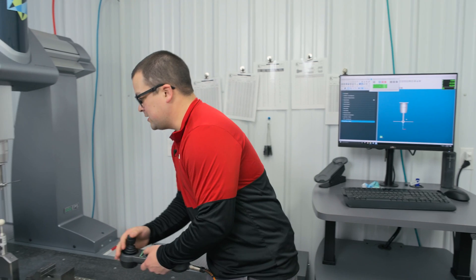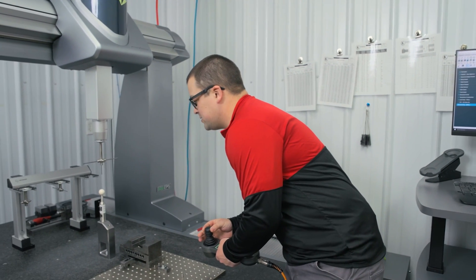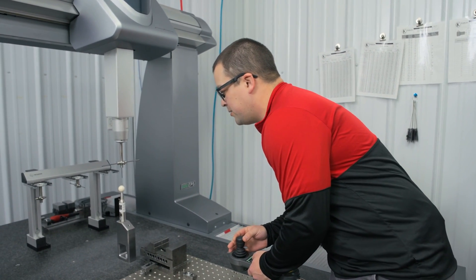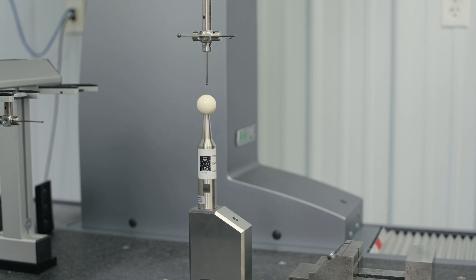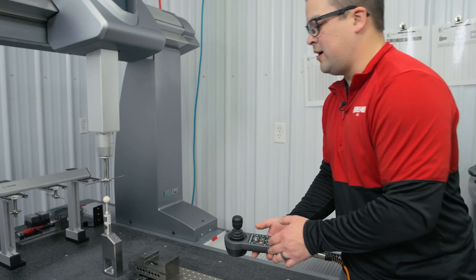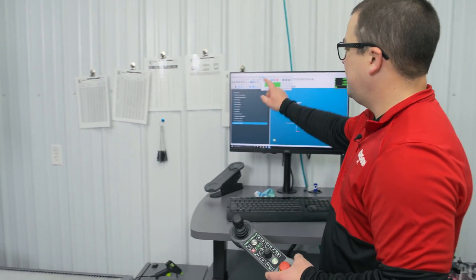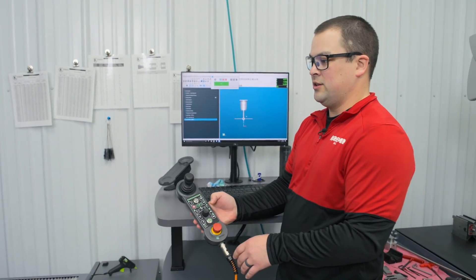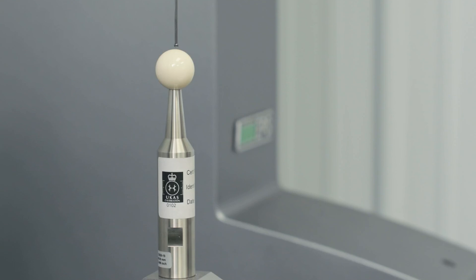So we're just going to touch the top of that sphere to let the CMM know where it's at. You don't have to hit it perfectly. Now that it knows where it's at and sphere feature will hit the green check and it's going to do its thing.